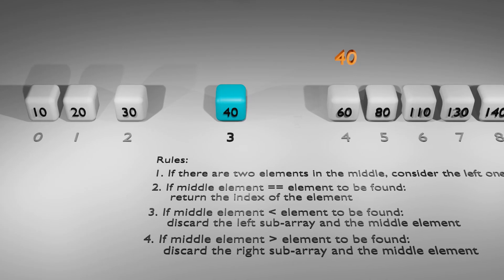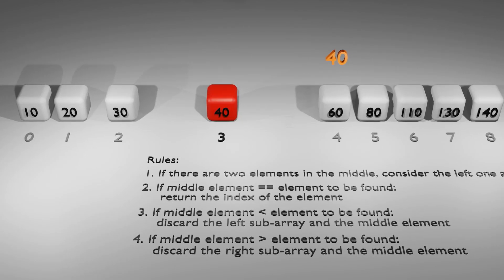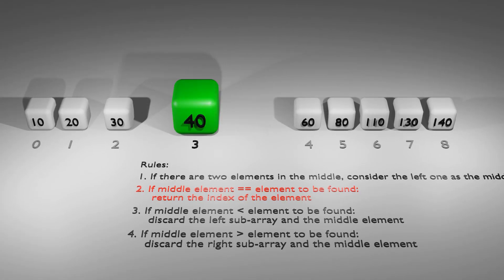Now we're left with an array consisting of only one element, which is naturally the middle element. We compare it with 40 and it's a match. According to rule number two, if it's a match, we return its position.